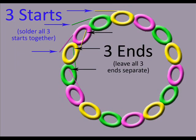The result is three sets of connected coils, each with one starting wire and one ending wire. The starting wires are then soldered together, thereby connecting all three phases, and leaving a total of three ending wires. This wiring technique is called Series Star.